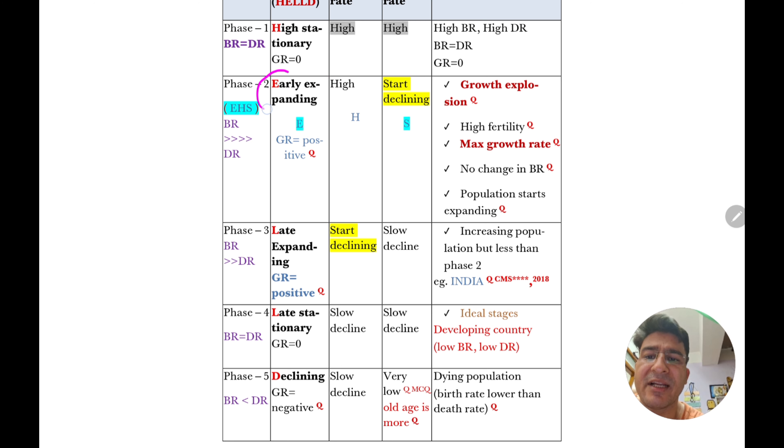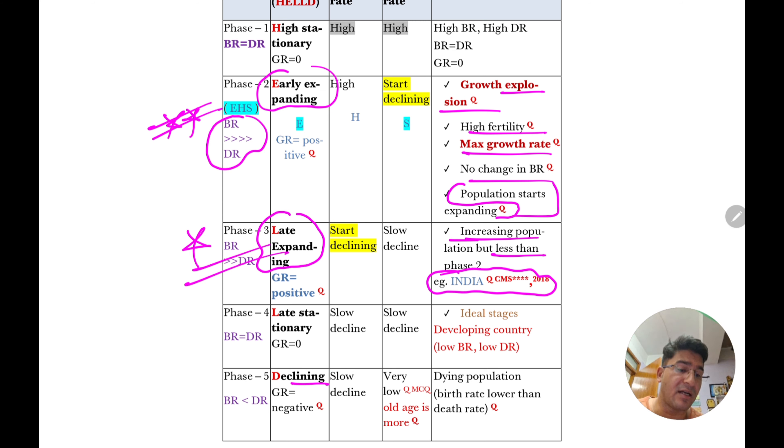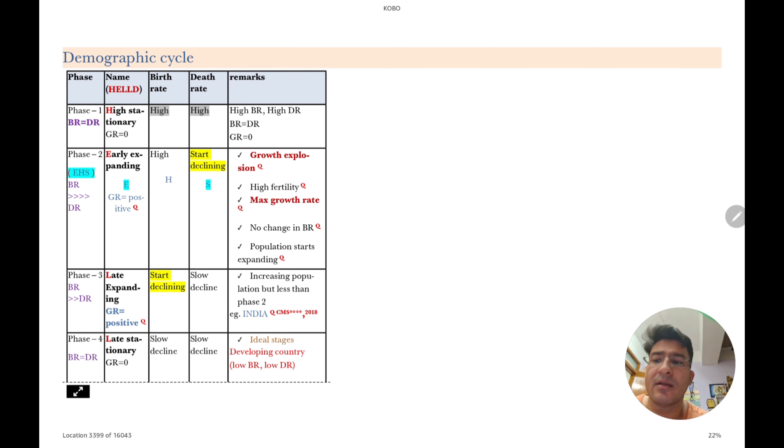Right? Ab dekho ispe question kya puchte hai. Sabse pehle puchha jata hai ki early expanding mein kya kya features milti hai. Sabse zyada puchte hai. Kyu puchte hai? Kyu kisme growth ka explosion hota hai. Kyu hota hai? Kyu kisme birth rate kaafi zyada hota hai deaths se. Islie maximum growth rate hai. High fertility hoti hai. Tabhi to growth rate zyada hai. Tabhi to birth rate zyada hai. So population start expanding. So yes, early expanding pe sabse zyada question aate hai. Ab puchte hai bhai batao India kis phase mein aata hai. So answer is phase three. Yani late expanding mein India aata hai. This is India example ka yeh. Kyu hai? Kyu ki isme bhi population increase ho rahi hai. Lekin phase two se kam increase ho rahi hai. So answer is phase three mein India aata hai. Baki declining mein jo woh sari country jiski population kam ho rahi hai.